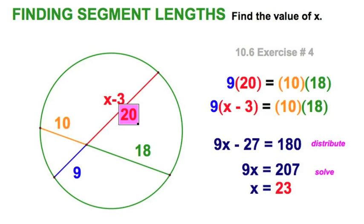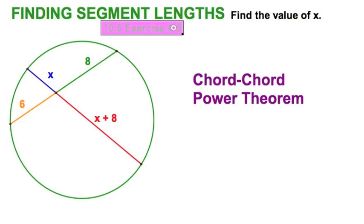So remember, this segment is 20. And we're done. Now let's step up to exercise number 5. This is where the power theorems got their name. When we do our red times blue, we can see we're generating an x squared term, and hence the power.